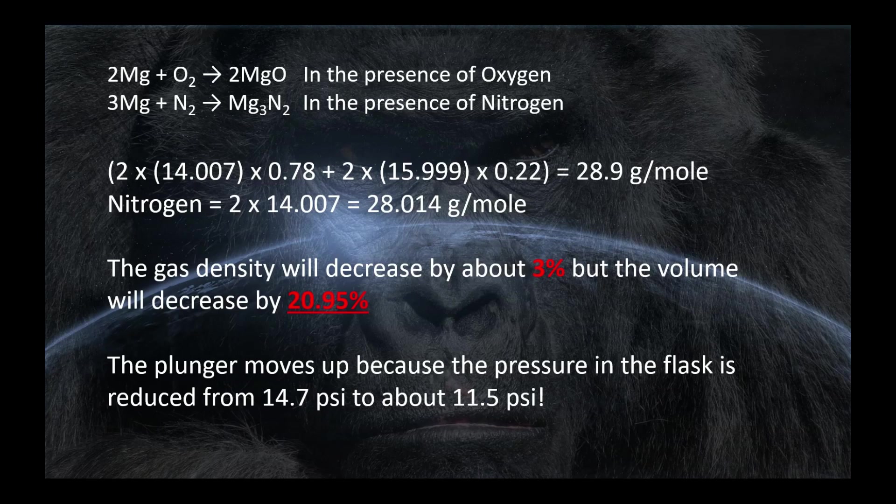The gas density when you burn magnesium will decrease by about 3%. But the volume will decrease by 21%. Now here I'm using the true percentage of O2 in the atmosphere. The plunger moves up because the pressure in the flask is reduced from 14.7 to about 11.5 pounds per square inch.